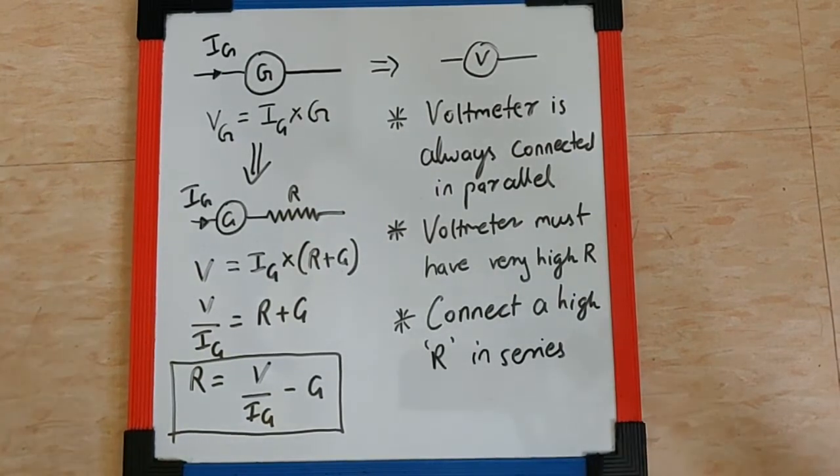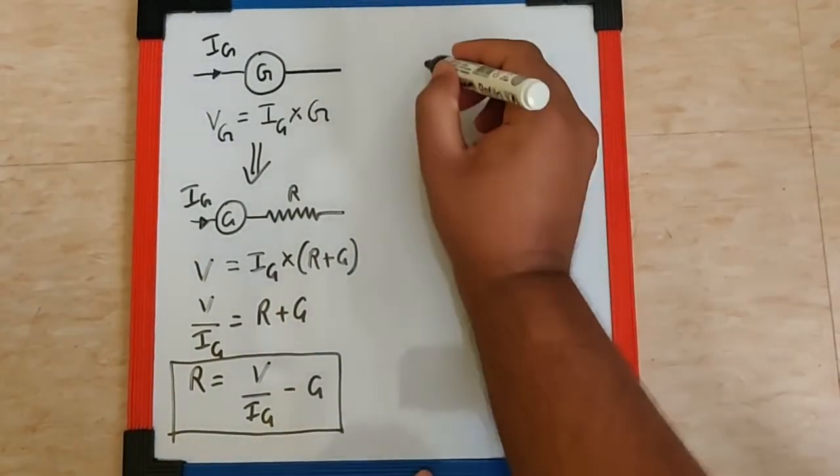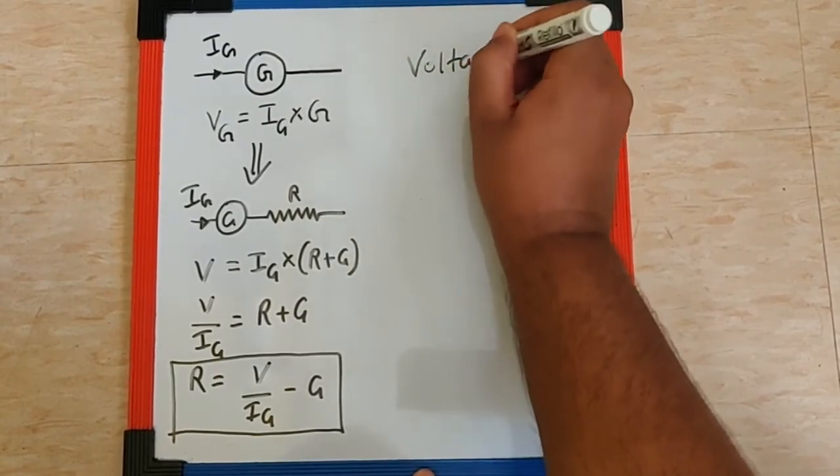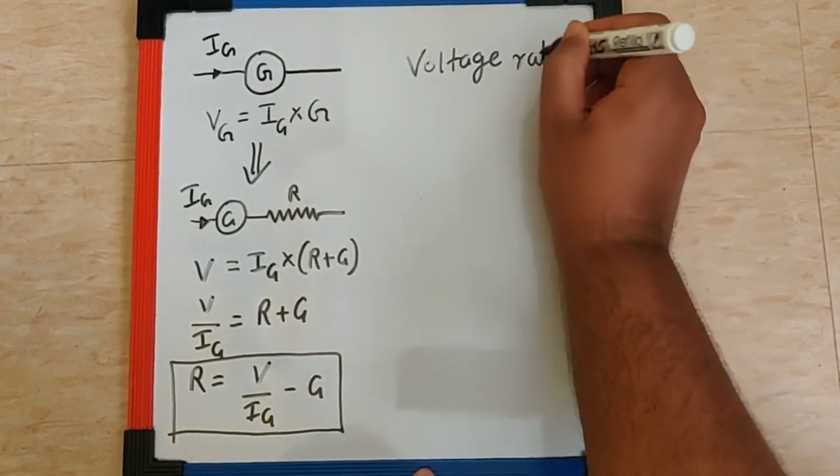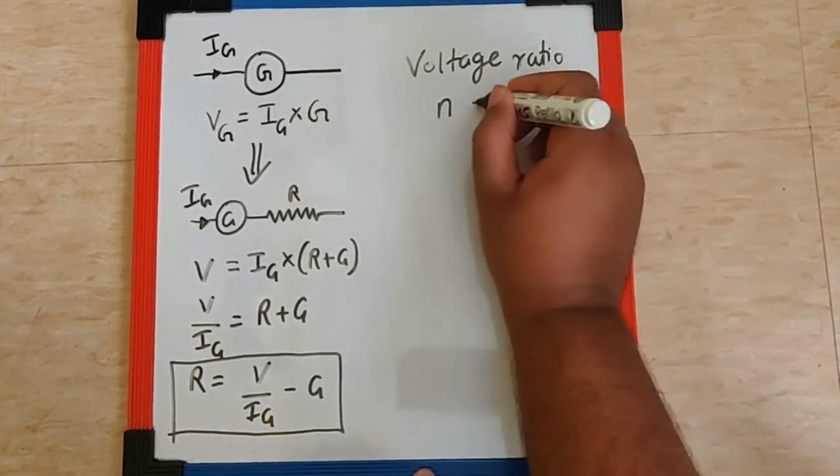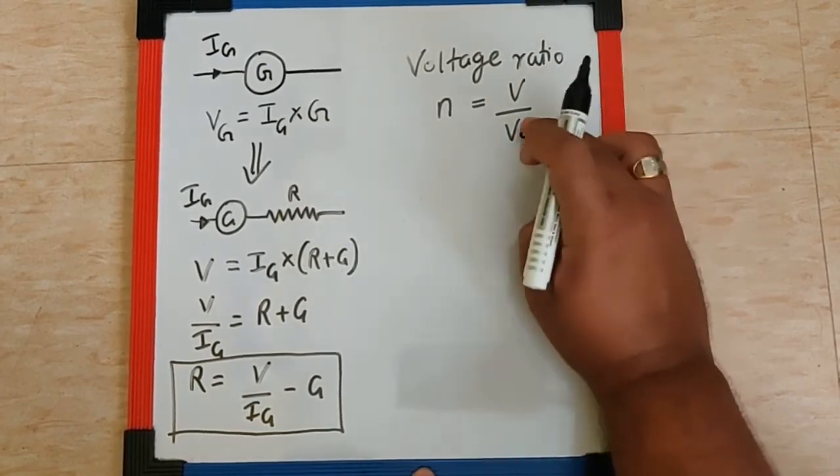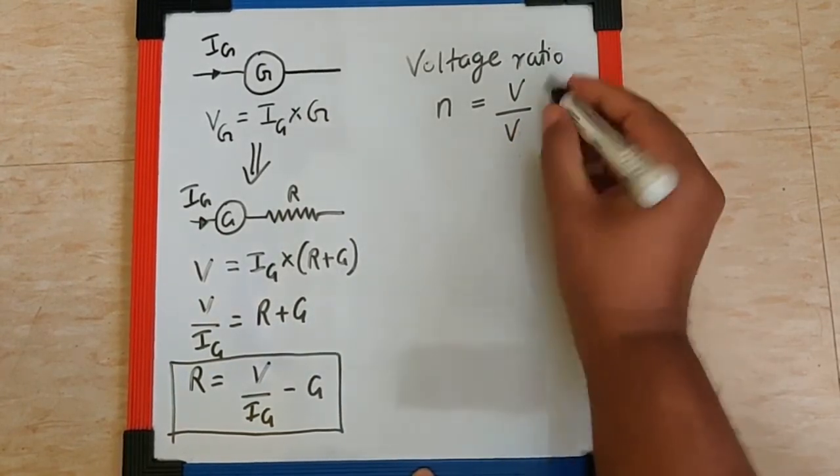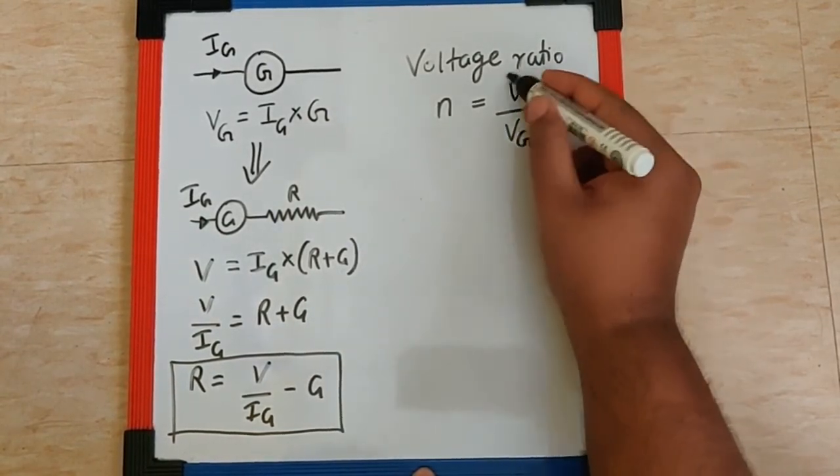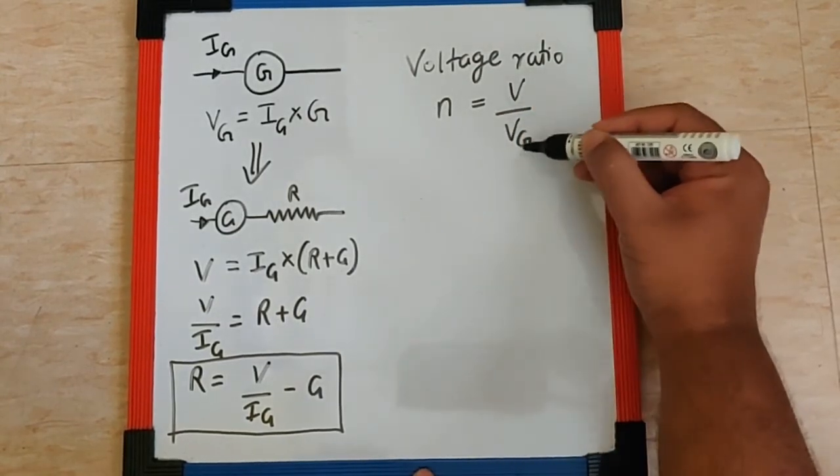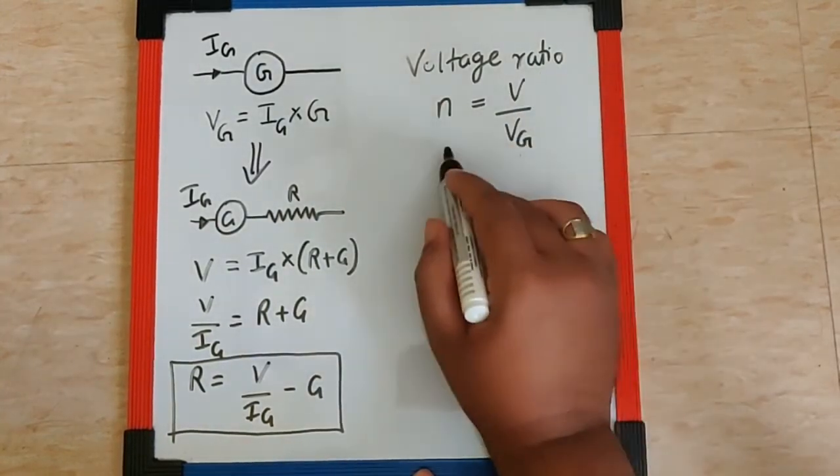Now apart from this, we have voltage ratio which is denoted by N and for the formula it is V by VG which is nothing but the maximum voltage the voltmeter can measure upon the maximum voltage the galvanometer can measure or handle. Now if this ratio is N,